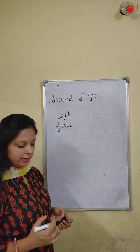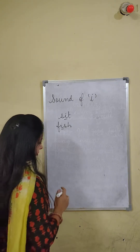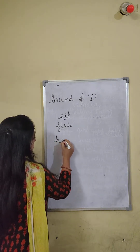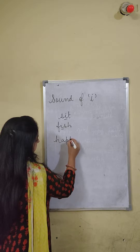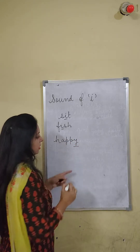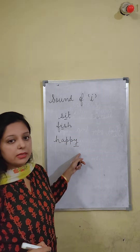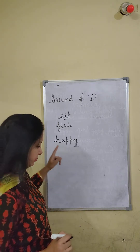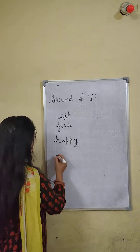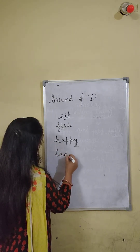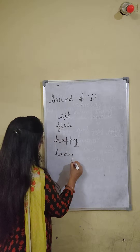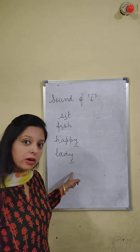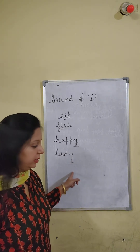Now let's see a few more words. Now the sound of Y. Happy — here it is Y but the sound of Y is like E — happy. Lady — Y is also sounding like E only.